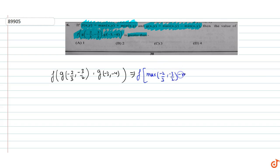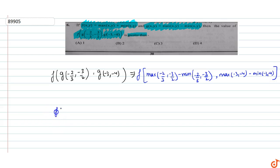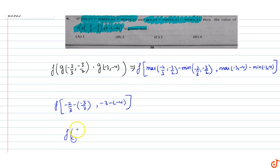So we find g of minus 2 by 3, minus 3 by 2 equals maximum of minus 2 by 3, minus 3 by 2 minus minimum of minus 2 by 3, minus 3 by 2. Similarly, g of minus 3, minus 4 equals maximum of minus 3, minus 4 minus minimum of minus 3, minus 4. This gives us f of: maximum of minus 2 by 3, minus 3 by 2 minus 2 by 3 minus of minus 3 by 2, comma maximum of minus 3, minus of minus 4.